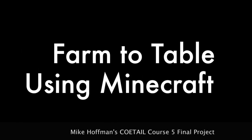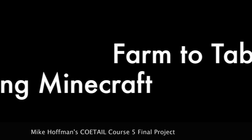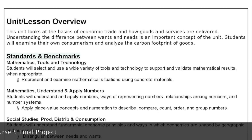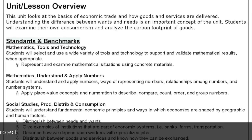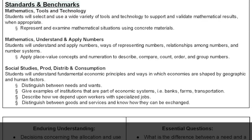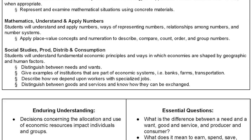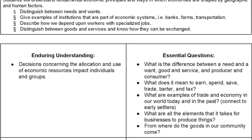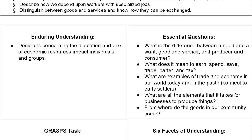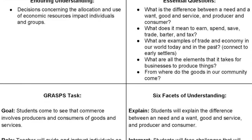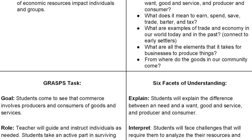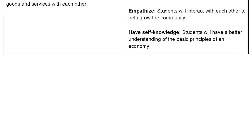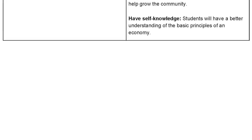For my Course 5 final project, I redesigned a second grade social studies unit. The title of the unit is Farm to Table. The unit covers the basics of economic trade and how goods and services are delivered. The enduring understanding for the unit is that decisions concerning the allocation and use of economic resources impact individuals and groups.